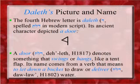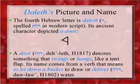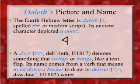As mentioned, the fourth Hebrew letter is daleth or dalet — modern speakers don't always use the 'th' sound. Its spelling is daleth-lamed-tav, shown there in the modern script, and its ancient character depicted a door. You'll notice the similarity between the ancient Hebrew character and our modern number four.